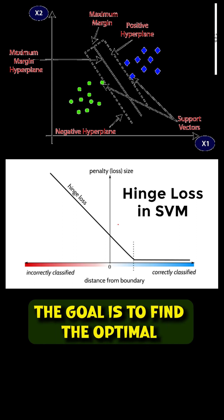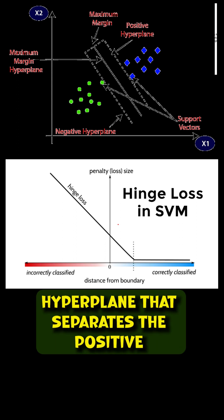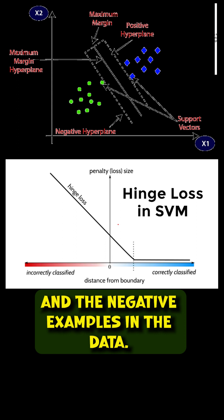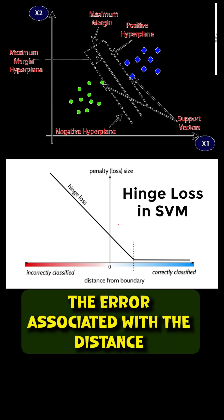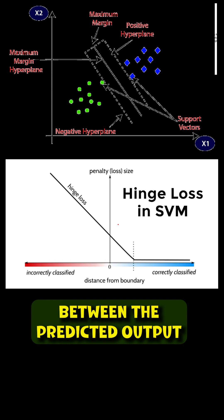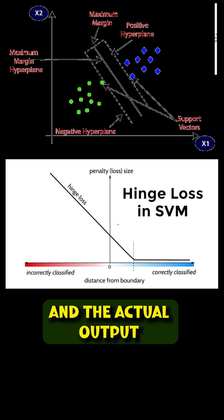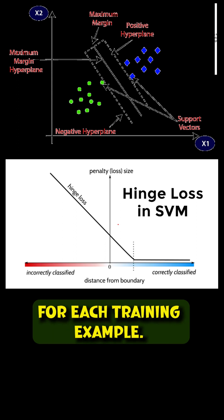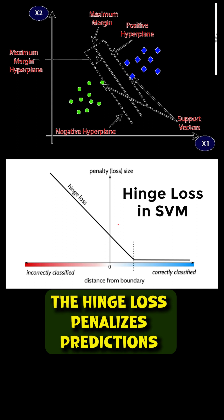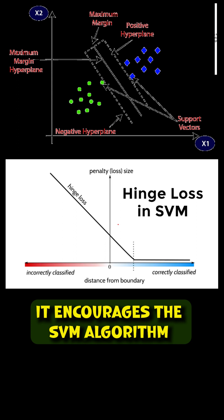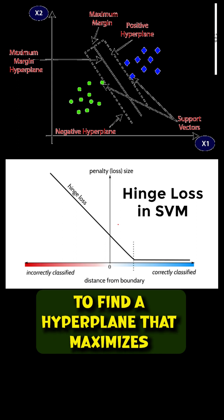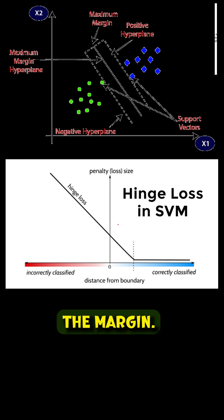In SVM, the goal is to find the optimal hyperplane that separates the positive and the negative examples in the data. The hinge loss measures the error associated with the distance between the predicted output and the actual output for each training example. The hinge loss penalizes predictions that are on the wrong side of the margin, and it encourages the SVM algorithm to find the hyperplane that maximizes the margin.